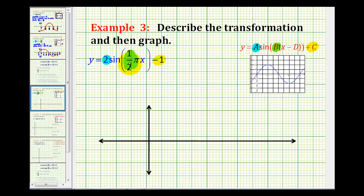The absolute value of A is the amplitude. So the absolute value of two is two, so our amplitude is two.